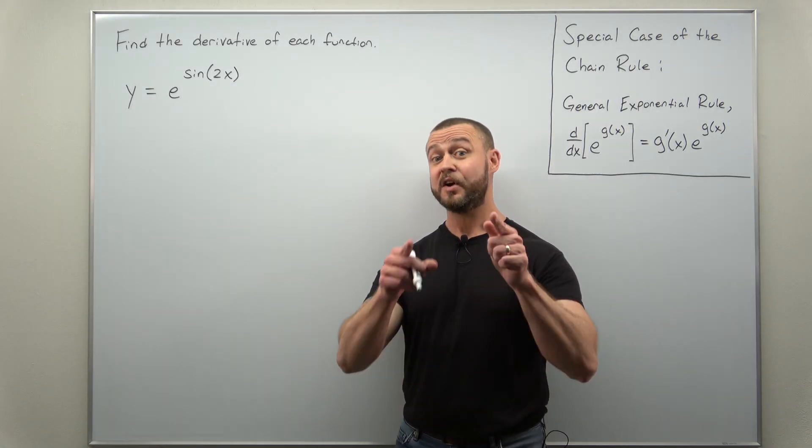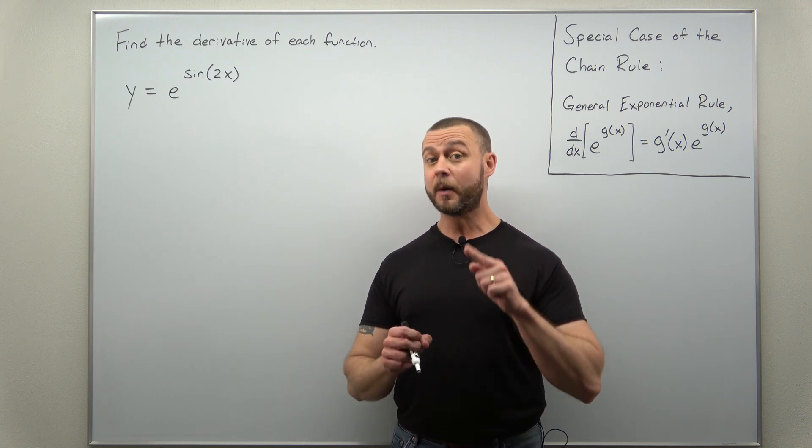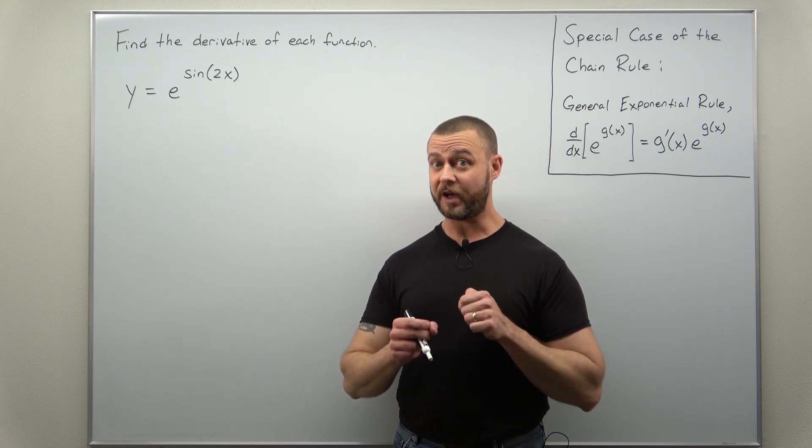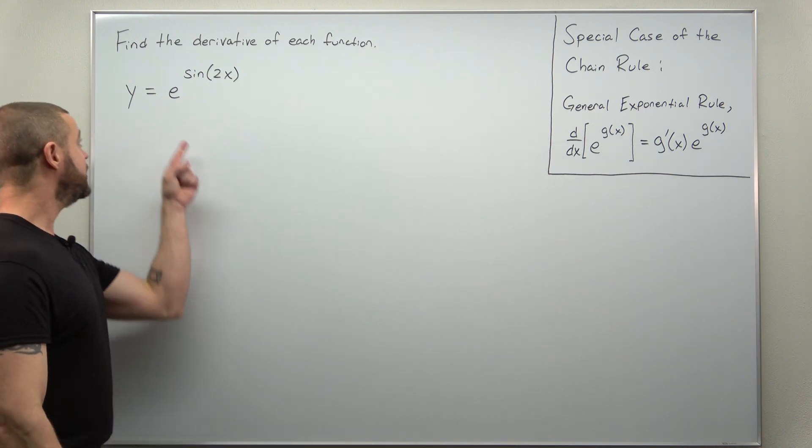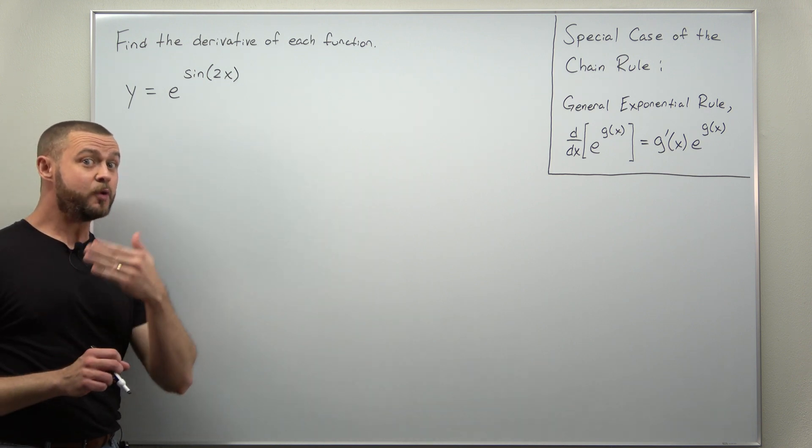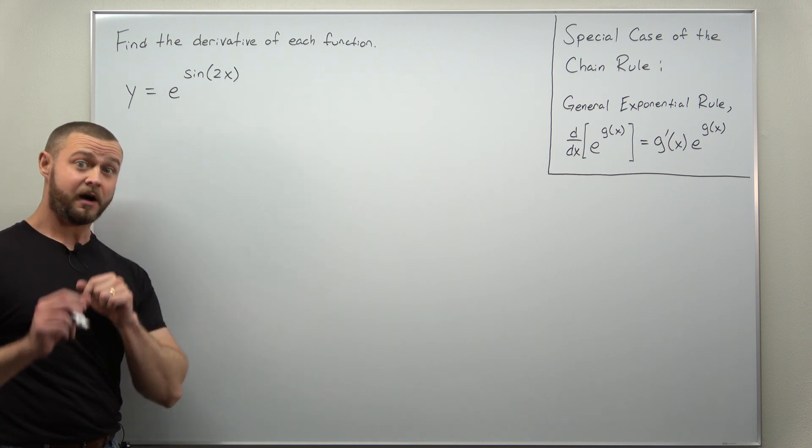Greetings fellow mathematicians. We're going to take a look at a problem on calculating a derivative where we need to apply the chain rule several times. If we look at our function, we can see that it's a composite. We have e raised to another function, but the inner function here is itself a composite.